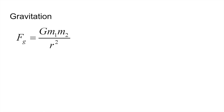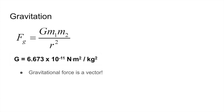Moving on to gravitation: the gravitational force between two objects of mass m₁ and m₂ is F = Gm₁m₂/r², where r is the distance between the objects. Remember that in the projectiles unit, gravitation was treated as a constant — that's only valid for objects that move a relatively small distance compared to Earth's radius. The constant G is 6.673 × 10⁻¹¹ N·m²/kg², and the F=ma provides this on their formula sheet. Gravitational force is a vector always pointing toward the other mass — gravity only attracts, never repels.